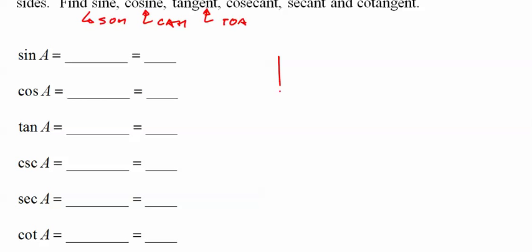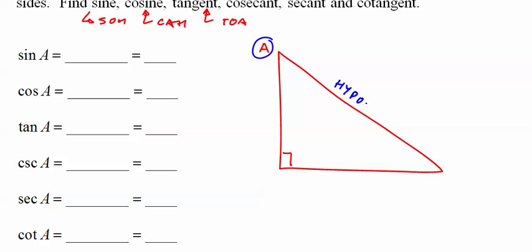It's got a right angle. You pick one angle, and early on I like to circle it. You label the other sides. Across from the right angle, of course, is the hypotenuse. Across from angle A is the opposite side. And then next to angle A is the adjacent side.